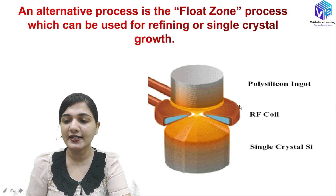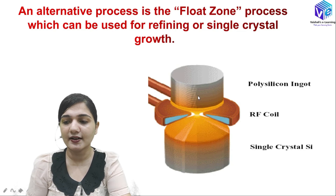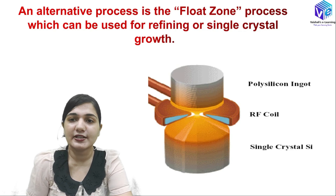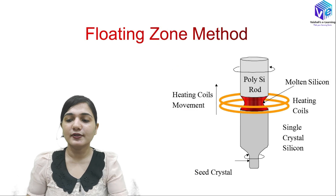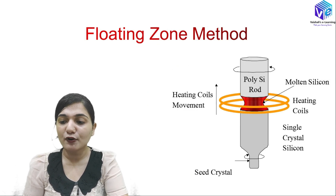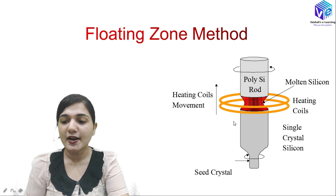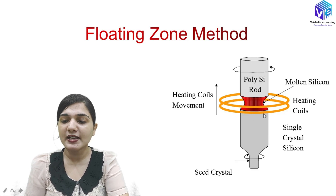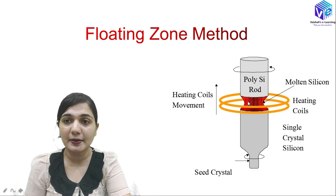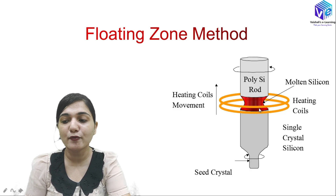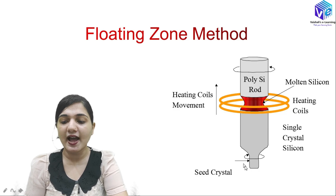Here is the diagrammatic representation. This is the RF coil. Here we have the single crystal silicon and here we have the polycrystal ingot — the polysilicon ingot or the polycrystal form of EGS. This heating coil will be moving throughout the length. Here you can see the heating coils moving along the polysilicon rod. Wherever the heating coil is present, the silicon will be in the molten state — this red part represents the molten silicon. Here at the downside we have the seed crystal.